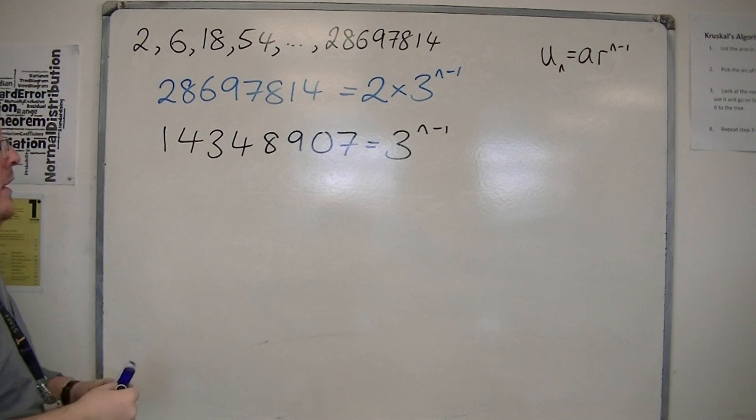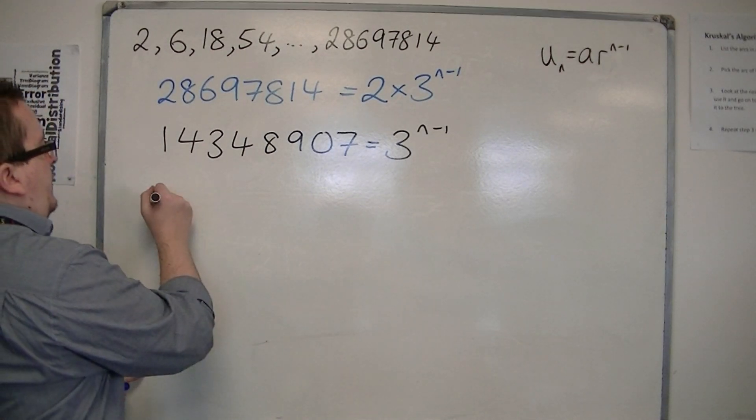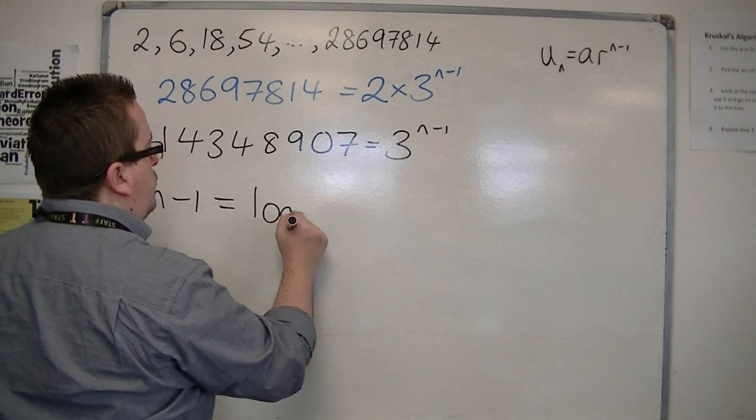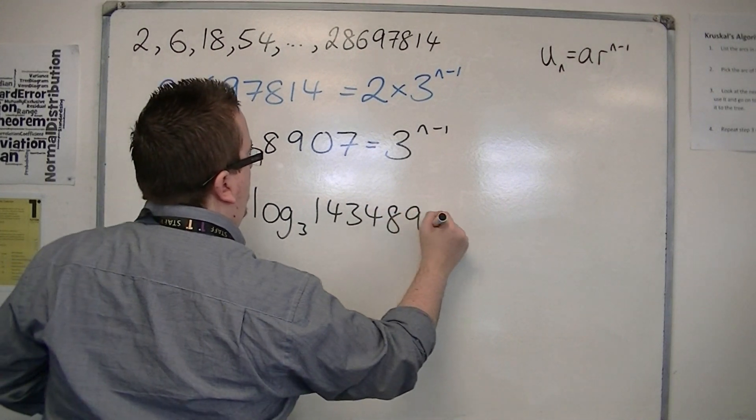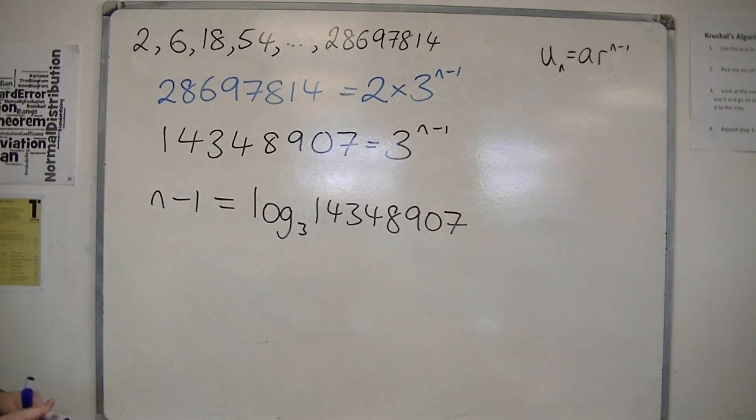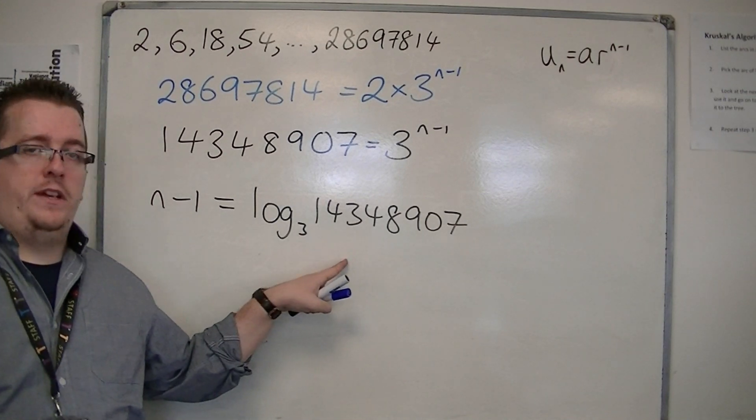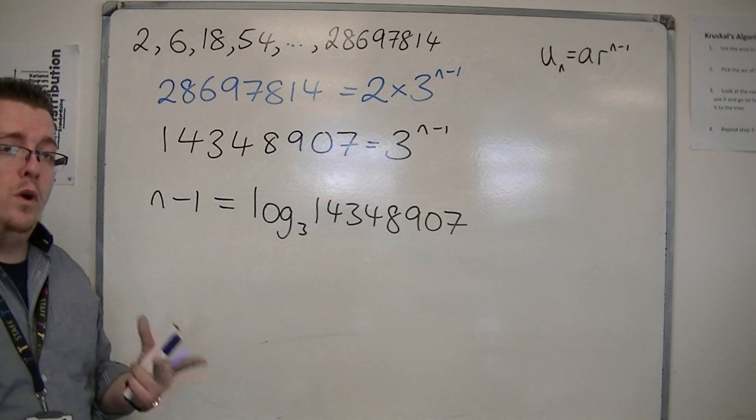So, using logarithms, I could just go straight in and then go, well, that means that n minus 1 is log base 3 of 14348907. Okay, going from the exponential notation to logarithmic notation. Or you could do the method of taking logs of both sides. Okay, that way it will work as well.